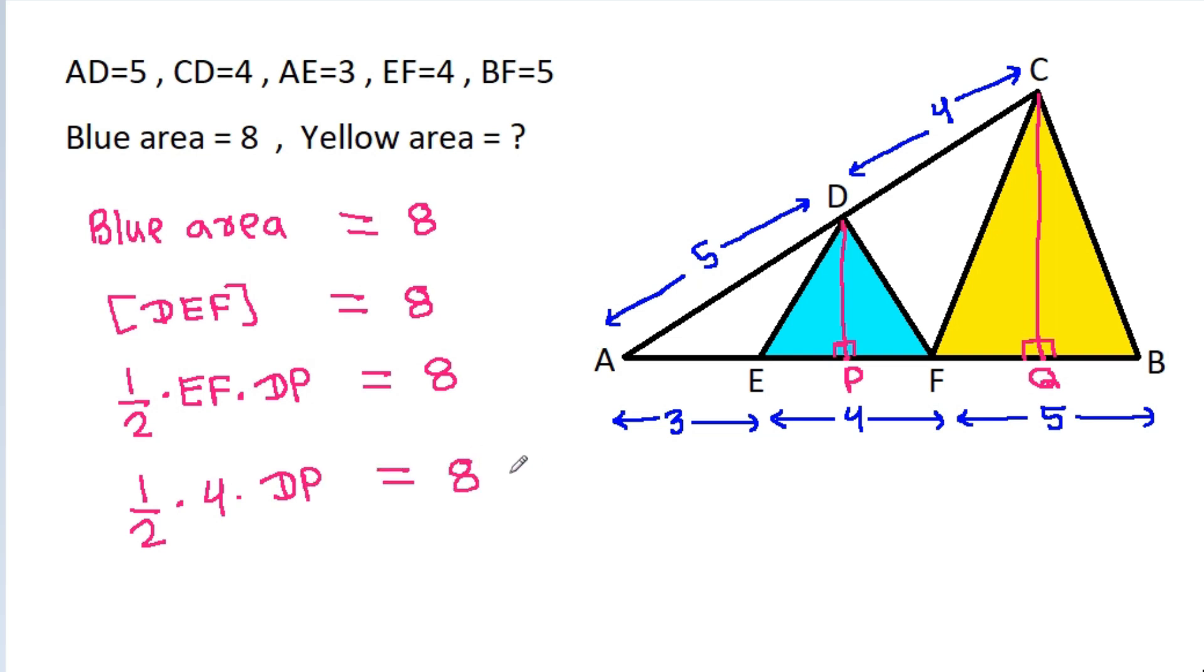So 1/2 times 4 times DP equals 8. Therefore 2 times DP equals 8, so DP is equal to 4.